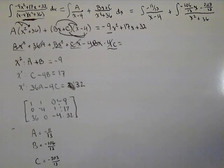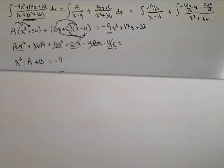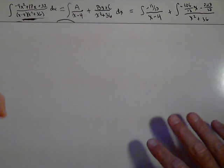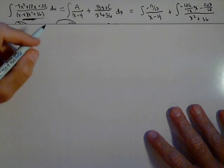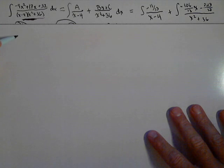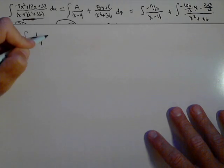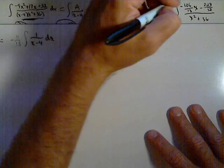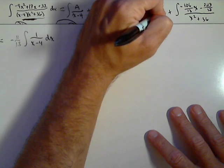So let's put this on another sheet for a little bit more room. So what do we have, and I'm gonna pull out the constants to make it a little bit easier. So negative 11 over 13 times the integral of 1 over x minus 4 dx. And we are missing dx's here.